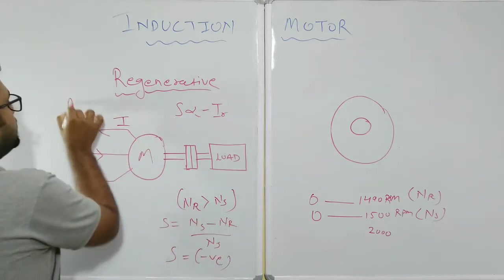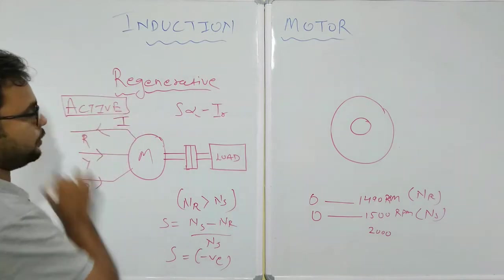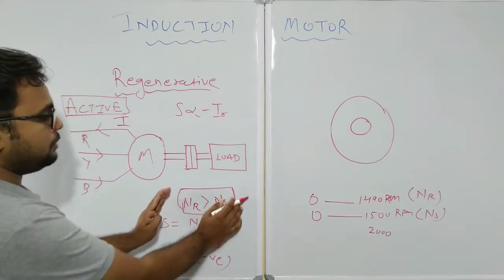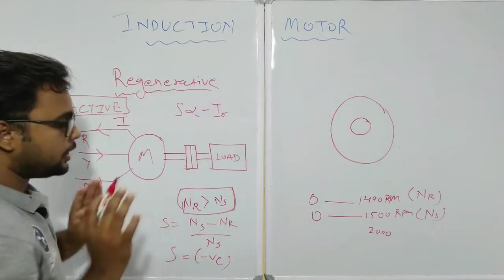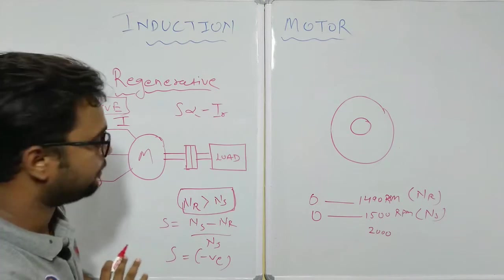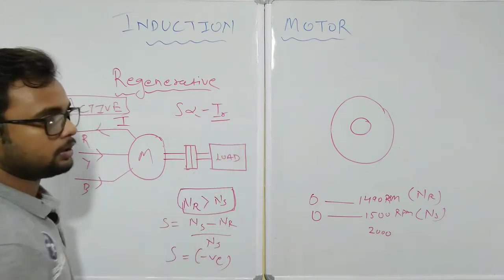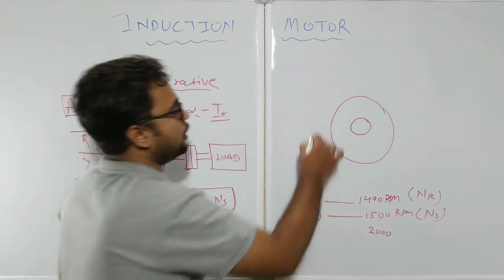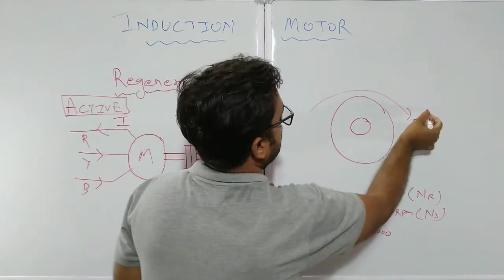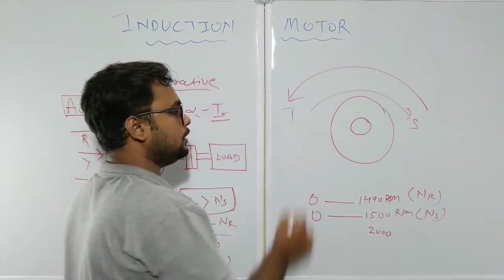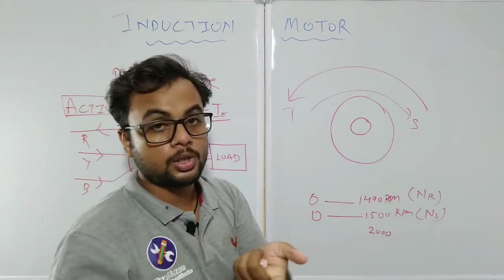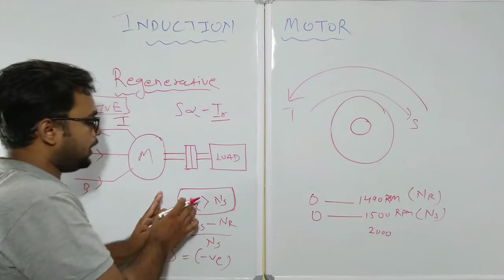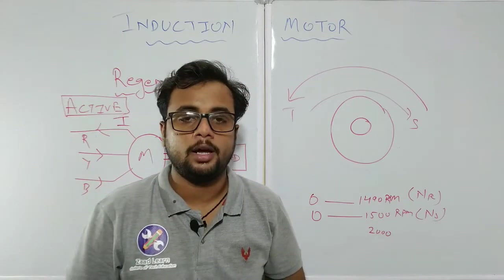In this condition, the induction motor will supply active power back while acting as a generator. The IR value is reversed, so current is now coming out of the motor. When the current value changes, the torque direction gets reversed. Since speed and torque are now in opposite directions, this is a braking operation. The question arises: how can we increase NR beyond NS?